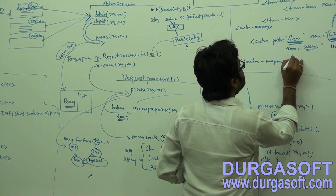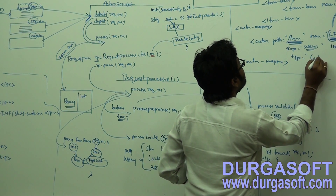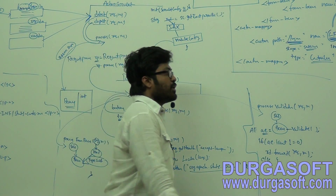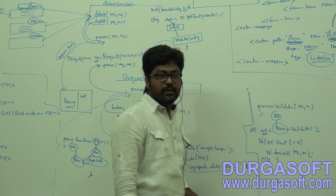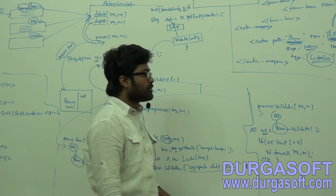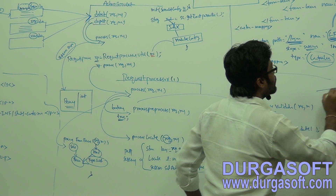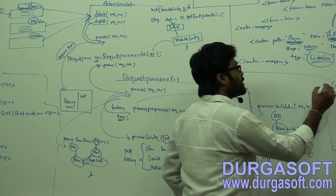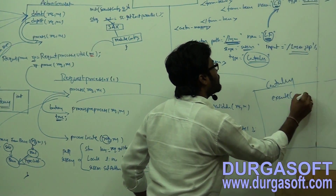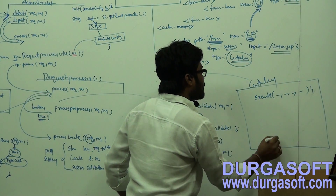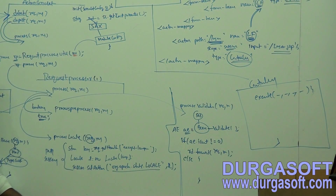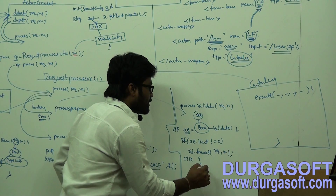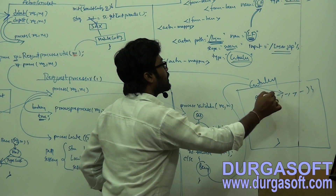In the else case, we have one more attribute called type, in which we can configure the controller class. If there are no errors, your controller class object will be created. We need to have one controller component. It will create your controller class object, which has one execute method. It will forward the same bean object to your controller.